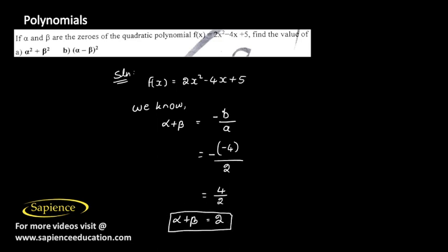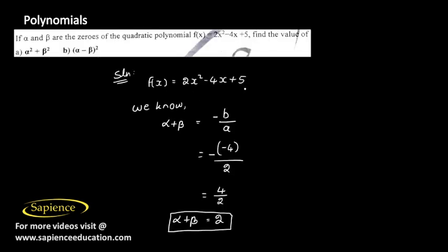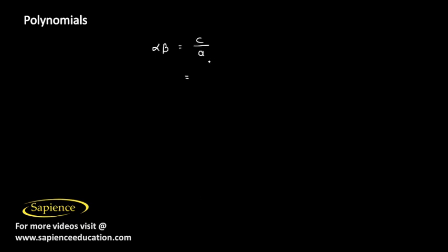The product of the zeros, αβ, equals the constant term divided by the coefficient of x². Here the constant is 5 and the coefficient of x² is 2, so αβ = 5/2.